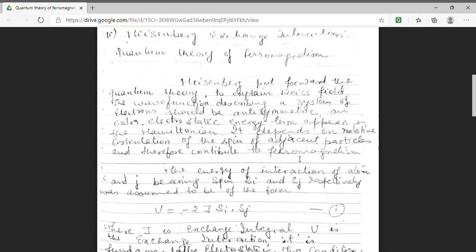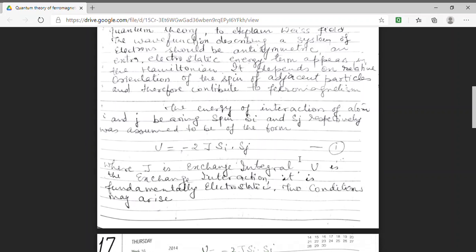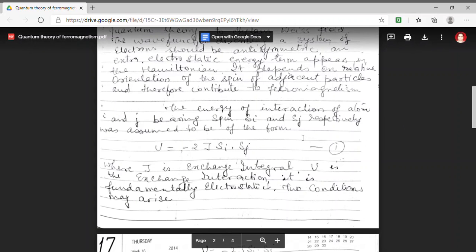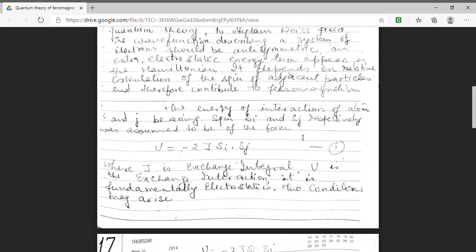This term will depend on the orientation of spin of neighboring particles. Here, I am assuming only two spins. I am assuming the atom labeled by indices i and j and let these atoms have spin Si and Sj.